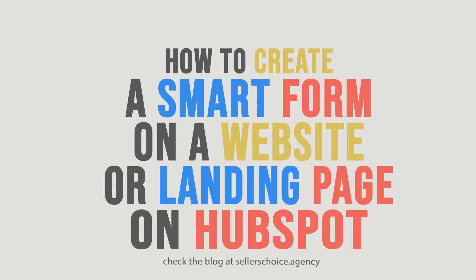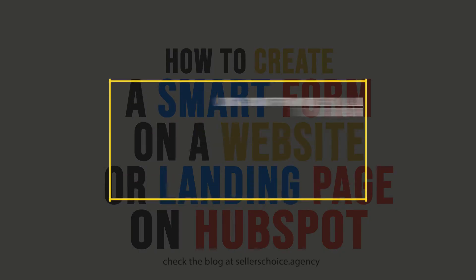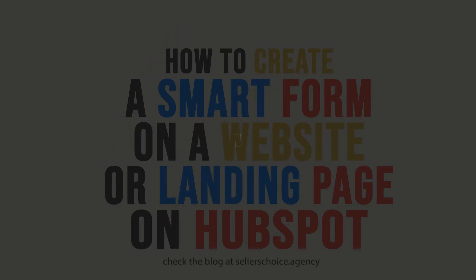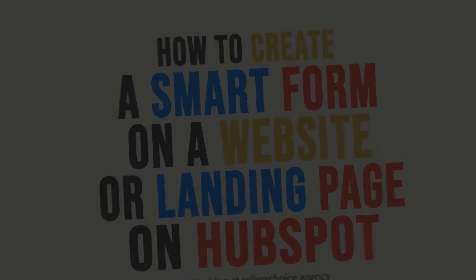A lot of things are getting smart today, not only mobile phones but also websites. There are a couple of things that you can set to be smart in HubSpot, and one of these is forms. Using a smart form module will allow you to change an entire form depending on your website visitor and their particular viewer characteristics. You can create different forms in HubSpot and turn all of them into a smart form. Since there are different types of website visitors, you may need to have a different approach for them. You can customize the smart form to change the entire form based on how your customer has interacted with your website. So let's get started.